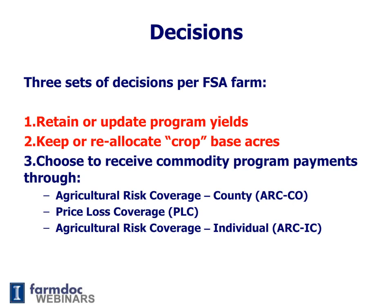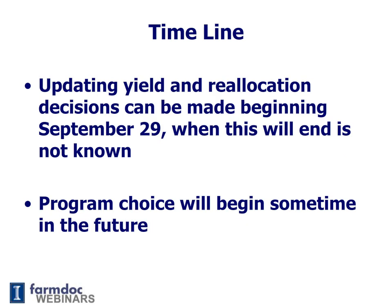The decisions that you can make can vary across those farms. The three decisions are: retain or update program yields; keep or reallocate crop base acres; and finally, choose to receive commodity program payments through ARC County, PLC or Price Loss Coverage, or ARC Agricultural Risk Coverage Individual option.